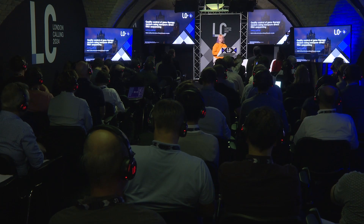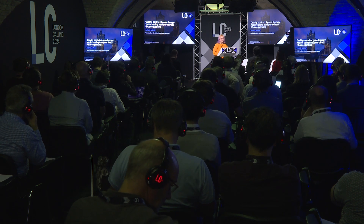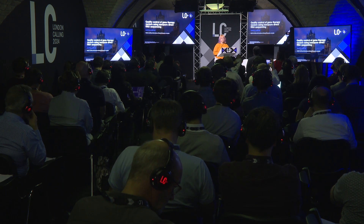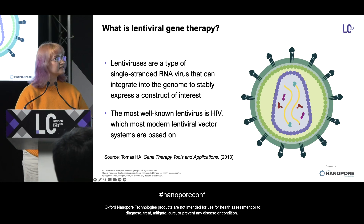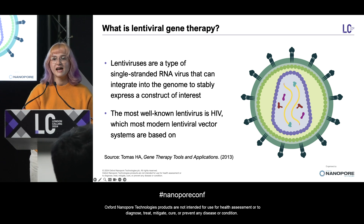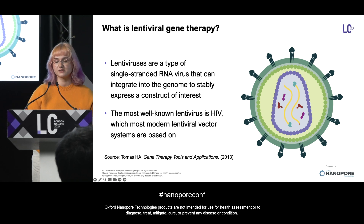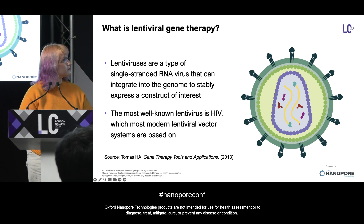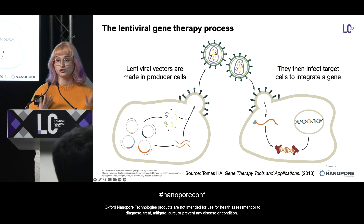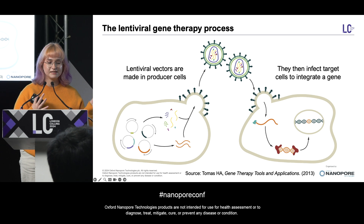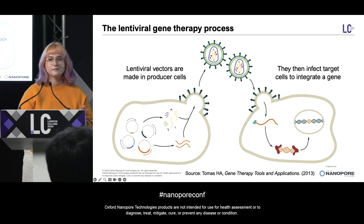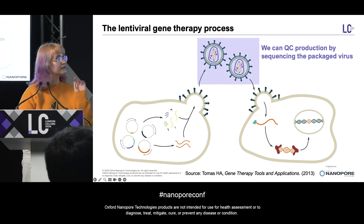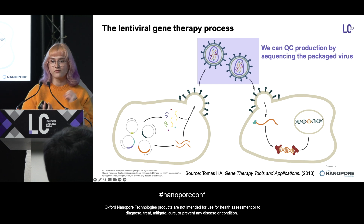I'm really excited to be here and tell you about some of the work we've been doing using direct RNA sequencing to do quality control of some lentiviral gene therapy vectors. Lentiviruses are a type of single-stranded RNA virus and in the context of gene therapy they're really interesting because they can integrate into the genome and stably express a construct of interest. The lentiviral gene therapy process can basically be divided into two parts: production and then integration. Today we'll mostly focus on the production and how we can QC the production process by sequencing the RNA from the packaged virus.